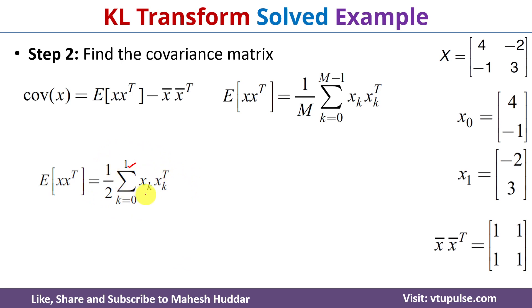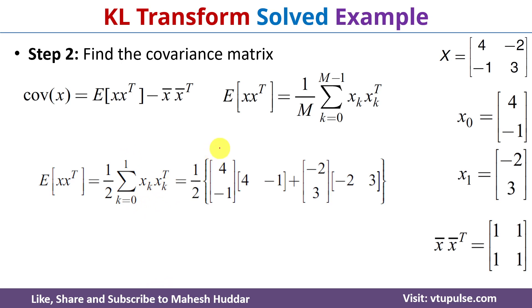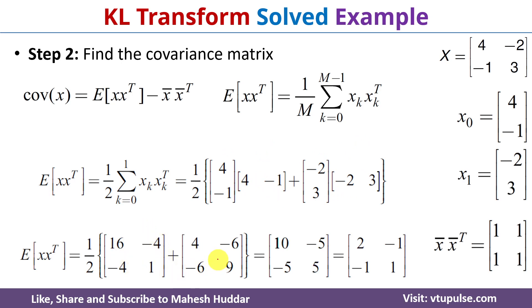Expanding this equation, in the first iteration we replace k with 0 giving x0 times x0 transpose, and in the second iteration we replace k with 1 giving x1 times x1 transpose. Performing the matrix multiplication between these pairs, and simplifying, we get the expected value of x times transpose of x as the matrix [[2, -1], [-1, 1]].